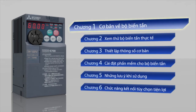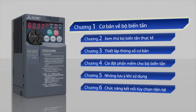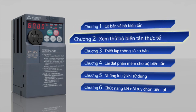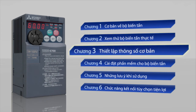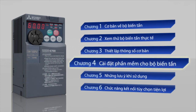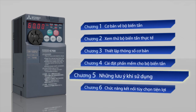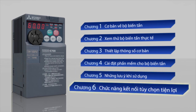Chương 1: Cơ bản về bộ biến tần. Chương 2: Xem thử bộ biến tần thực tế. Chương 3: Thiết lập thông số cơ bản. Chương 4: Cài đặt phần mềm cho bộ biến tần. Chương 5: Những lưu ý khi sử dụng. Chương 6: Chức năng kết nối tùy chọn tiện lợi.